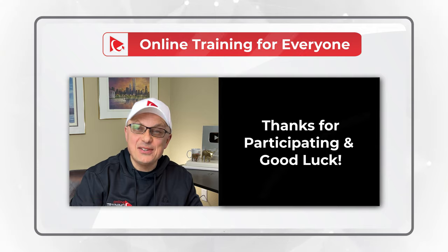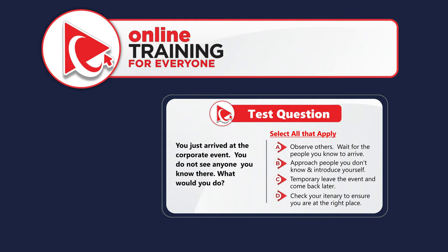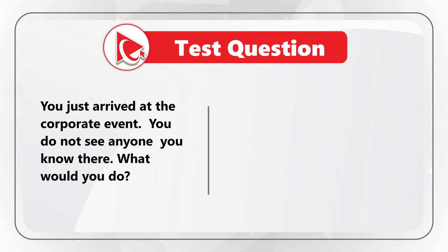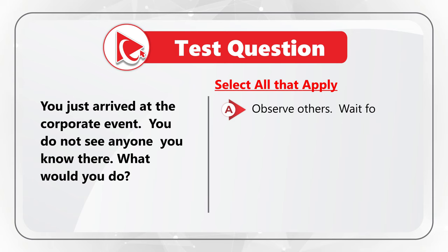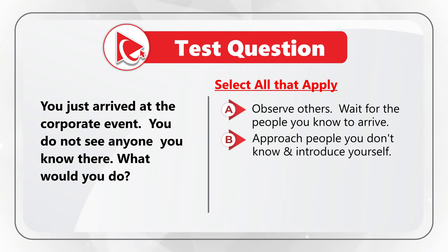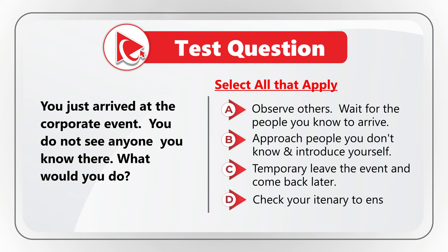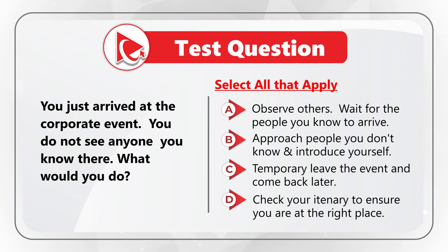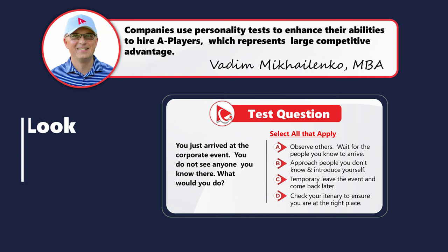Now let's continue and get you ready for the test. Here's a very interesting question to determine your personality. You just arrived at a corporate event and you don't see anyone you know there. What would you do? Select all that apply. Choice A: observe others and wait for people you know to arrive. Choice B: approach people you don't know and introduce yourself. Choice C: temporarily leave the event and come back later. Choice D: check your itinerary to ensure you are in the right place.